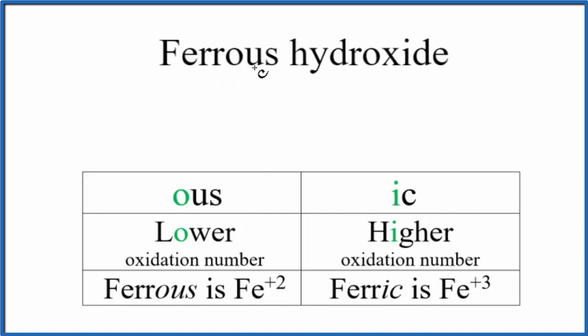We see this 'ous', what that means is we're going to choose the oxidation number here, it's lower. So in the case of iron we could have +2 or +3, but since it's ferrous we're going to choose the lower one, the +2.